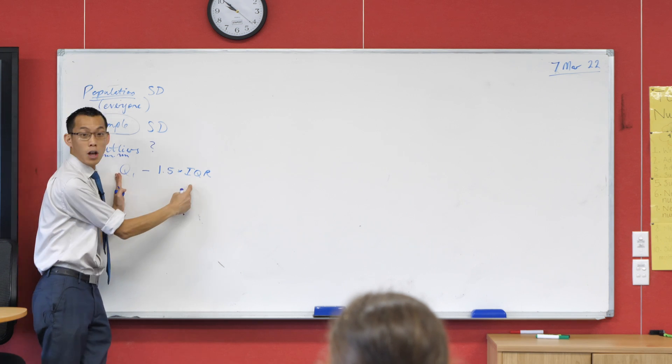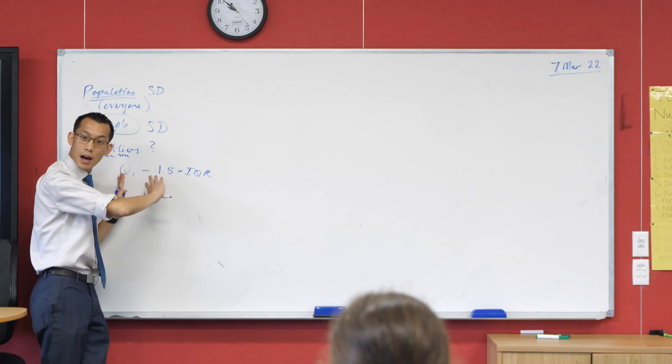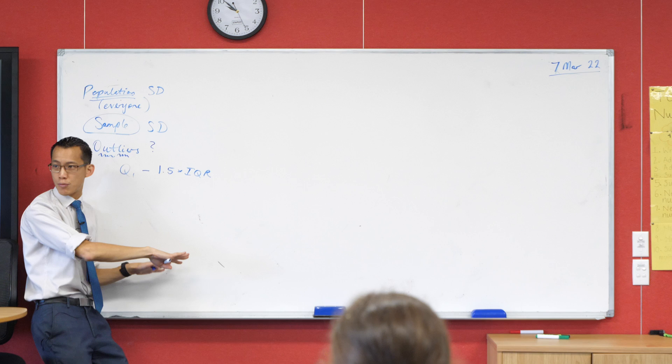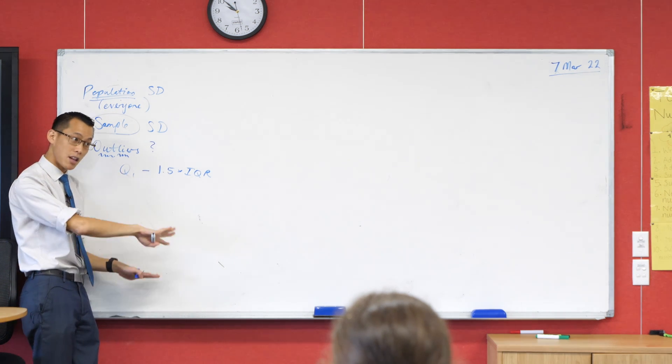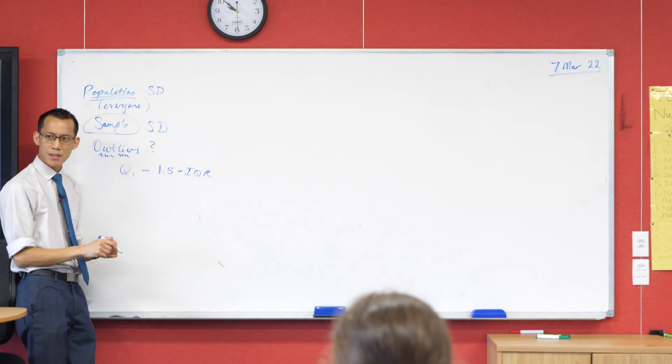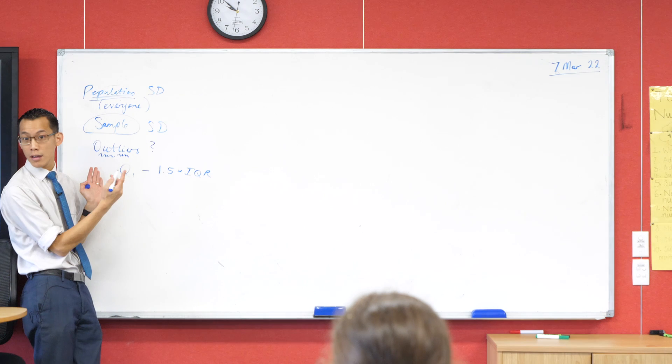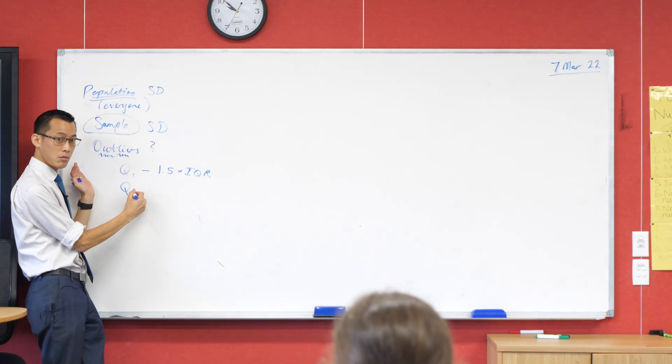If we go to the lower quartile and then go lower, anything underneath that, we would say like, whoa, that's pretty down out of the way. This is the lower part. How do we get the other side? It's symmetrical to this. It would be the upper quartile which is Q3.